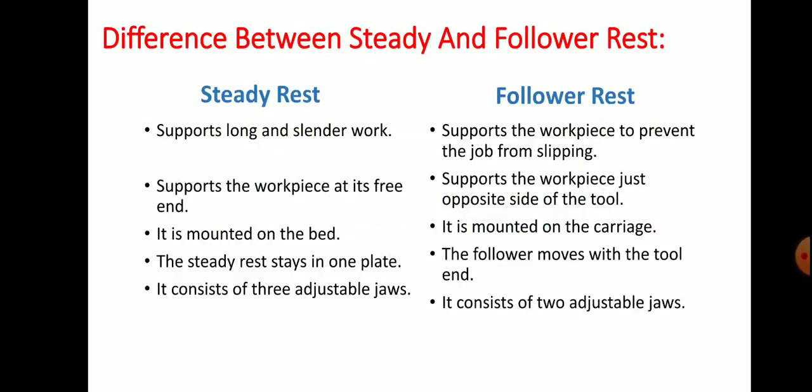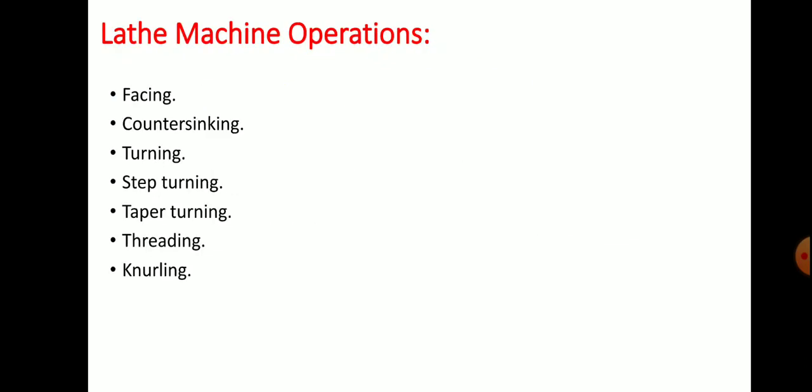Coming to the difference between steady rest and follower rest: in steady rest it supports long and slender workpieces, but follower rest supports the workpiece to prevent the job from slipping. Steady rest supports the workpiece at its free end, but follower rest supports the workpiece just opposite the tool. Steady rest is mounted on the bed; follower rest is mounted on the carriage. The steady rest stays in one place; the follower rest moves with the tool. Steady rest consists of three adjustable jaws; follower rest consists of two adjustable jaws.